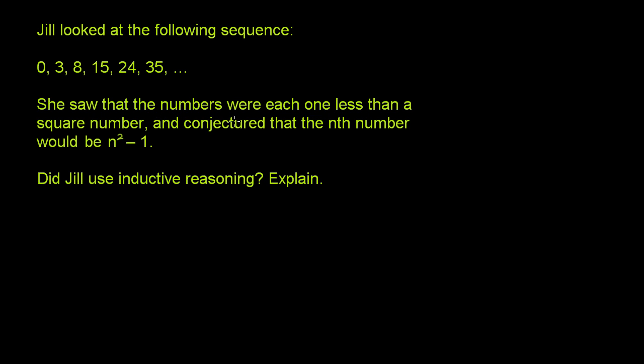She saw that the numbers were each one less than a square number. 0 is one less than 1, which is a square number. 3 is one less than 4. 8 is one less than 9. 15 is one less than 16. Yeah, they're all one less than a square number.